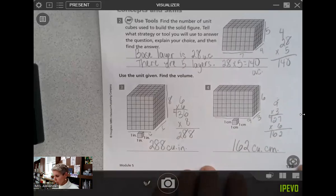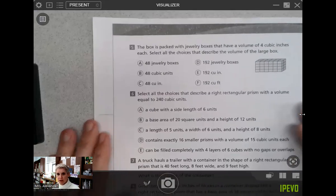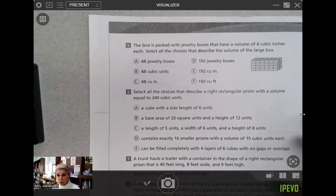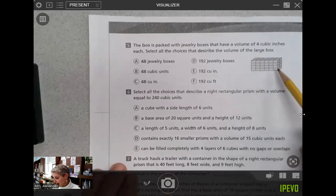On page 124, we have some multiple choice. The box is packed with jewelry boxes that have a volume of four cubic inches each. Select all the choices that describe the volume of the large box. So if the box is packed, these are jewelry boxes. They have a volume of four cubic inches each.